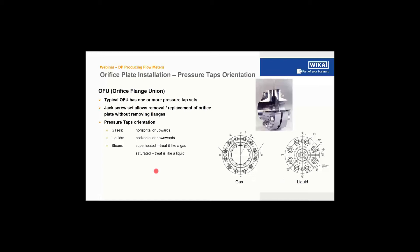Q&A: The reason gas taps are at 30° and liquid taps at 45° is that different flange ratings have different flange bolt locations, and pressure taps are placed between flange bolts. The orientation of taps and jack screws adjusts based on the number of tap sets, jack screw positions, and the number of bolts in the flange.